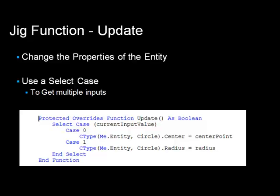When the Sampler function returns SamplerStatus.OK, the Update function is called — this is where you change the properties for the entity passed into the constructor. In this example, the center of the circle is updated and then the radius. A Select Case is used to gather input using a jig in two passes. When the center is being gathered, AcquirePoint is used in the Sampler function to set the member variable CenterPoint. When the radius is being determined, AcquireDistance is used to set the radius member variable. You will need to coordinate your Sampler and Update functions so they work together.